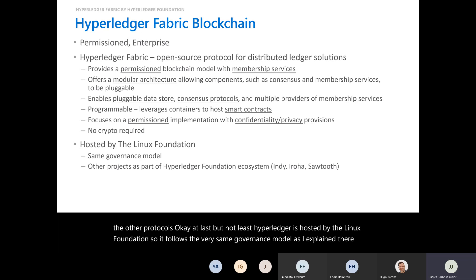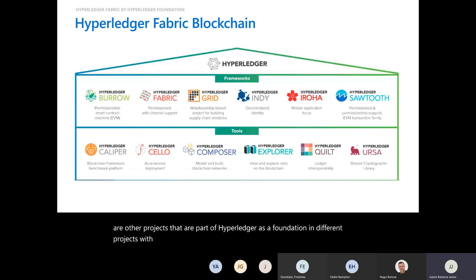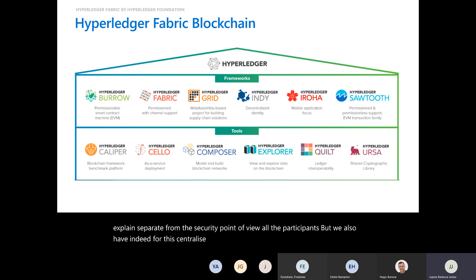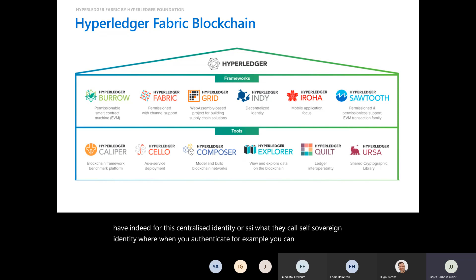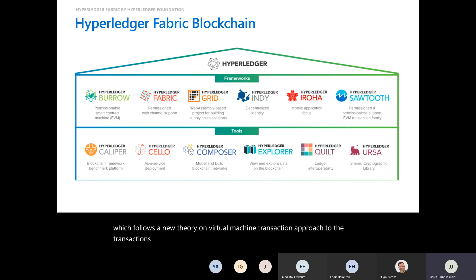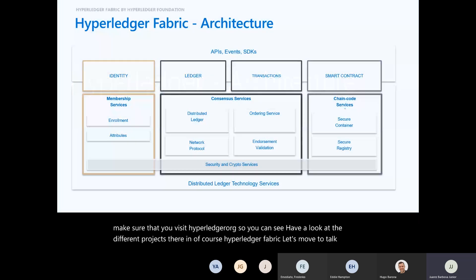Hyperledger is hosted by the Linux Foundation and follows the same governance model. Beyond Fabric — which is a permissioned protocol with channel support — there are other projects. Hyperledger Indy is for decentralized identity or SSI (self-sovereign identity), allowing you to selectively share profile fields when authenticating. Sawtooth follows an Ethereum Virtual Machine transaction approach. Make sure to visit hyperledger.org to explore all the different projects.